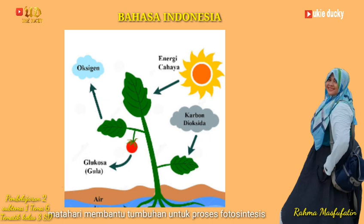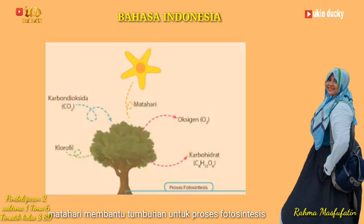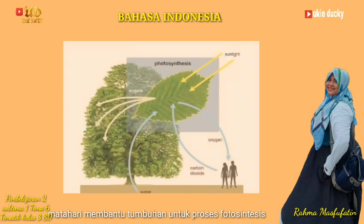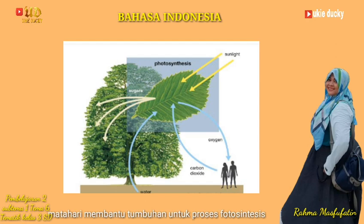Hasil fotosintesis akan diedarkan ke seluruh bagian tumbuhan untuk bernafas, untuk berkembang biak, dan untuk cadangan makanan. Cadangan makanan biasanya disimpan di dalam akar, ubi, buah, dan biji. Kemudian, hasil zat sisa dari fotosintesis berupa oksigen dapat dimanfaatkan manusia dan hewan untuk bernafas. Selain untuk fotosintesis, energi matahari juga bisa membantu menjaga temperatur tumbuhan, yaitu untuk memberikan warna hijau pada tumbuhan dan membantu pertumbuhan bunga serta daun, selain itu juga untuk mengeringkan tanah.